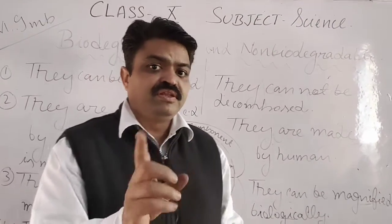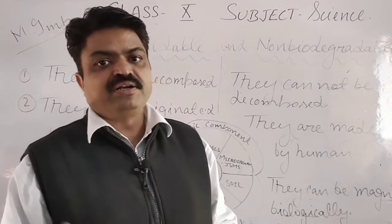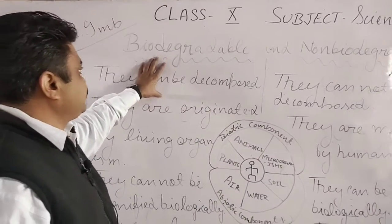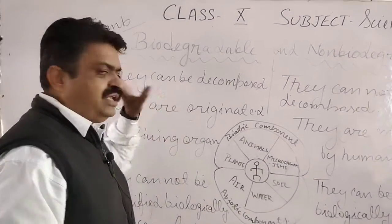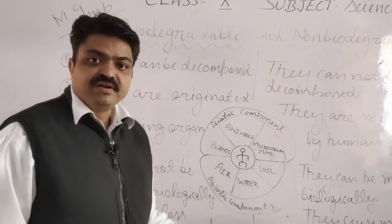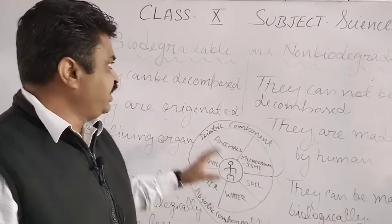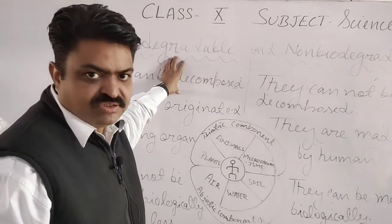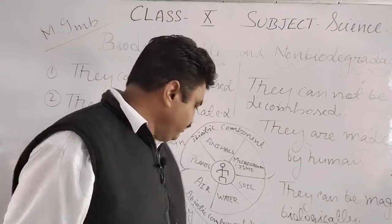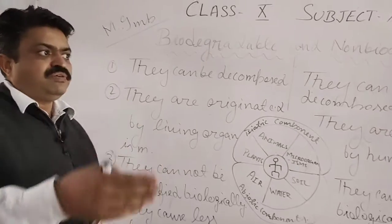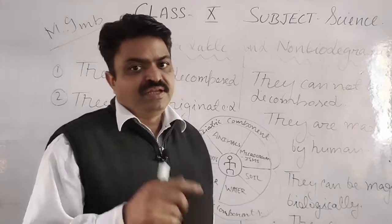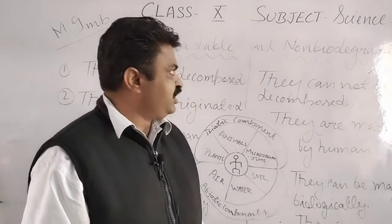Non-biodegradable substances cause all types of pollution: air, water, and soil pollution. Biodegradable substances are originated from living organisms, so all kitchen, garden, and agricultural waste come in the category of biodegradable substances. The peels of fruits and vegetables, tea leaves, and plant leaves also come in the category of biodegradable substances.